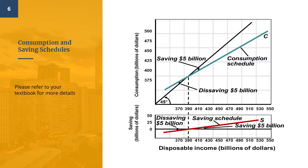Here is what the table shows visually. Remember that at each point on the 45-degree line consumption equals disposable income. We can see dissaving happening at low levels of income, and as households earn more they are able to meet their spending while having some income left for saving.